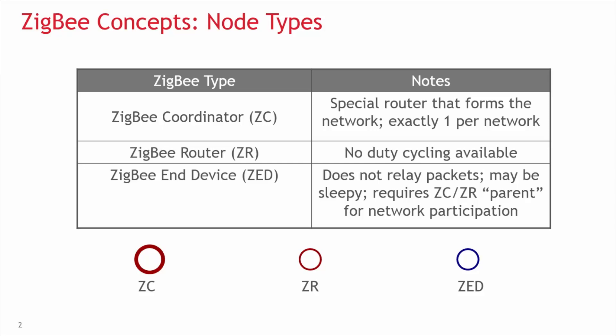Next, let's look at the router device type. A router has the ability to not only send and receive its own packets, but also to relay for other nodes in the network. Because other nodes rely on it for routing, it is not available for duty cycling — meaning the router can't go to sleep and wake up at various times because other nodes are depending on it to get messages through the network. If you want a device that duty cycles, you will have to look at end devices.